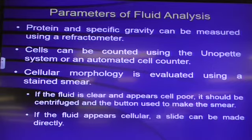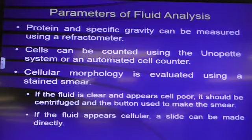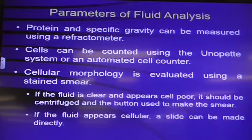For cell counts, there are various ways to do that. You can use an automated cell counter depending on what type of fluid it is, or you can use the Unopette system. We used to do that in microanatomy — the Unopette system is used to dilute your sample and look at it under the scope on a hemocytometer, which has got the scale on there so you can do cell counts. Also, you can look at the cellular morphology when you stain the smear, and again, this is where you need to use a microscope.